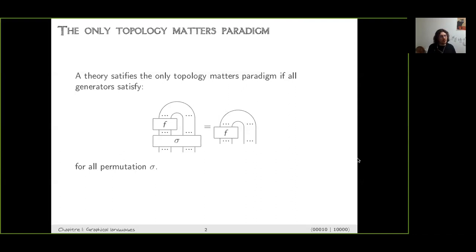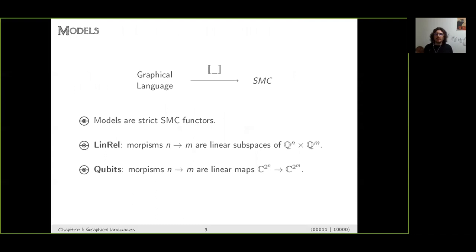Graphical languages are basically generalizations of equational theories. Like equational theories, we can have models and interpretations. To have a model of a graphical language, you need a symmetric monoidal category and a way to give an interpretation to composition and tensor. A model is just a strict symmetric monoidal functor — a morphism preserving composition and tensor product.